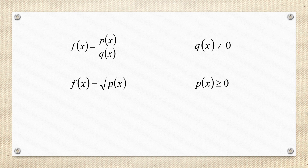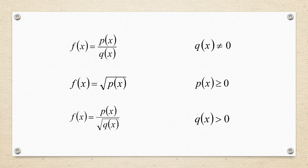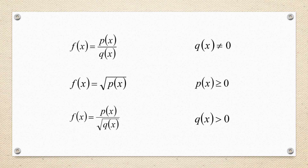Now let us combine these two conditions, that is we have the rational function as well as a root in the denominator, that is a function in the form of p(x) by root of q(x). By combining these two conditions, q(x) is under the root. Therefore, the function must be positive and it is in the denominator, so it is not equal to 0. Therefore, the overall condition will become q(x) is strictly greater than 0.